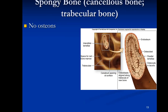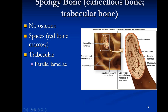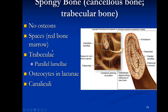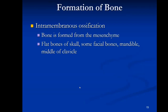Spongy bone, also called cancellous or trabecular bone, does not have osteons because it lacks a central canal. It has large spaces that mostly contain red bone marrow, important for blood cell formation. The lattice-work structures that create the spongy appearance are called trabeculae. They have parallel lamellae — not concentric, since there is no central canal — and still contain osteocytes in lacunae along with canaliculi.